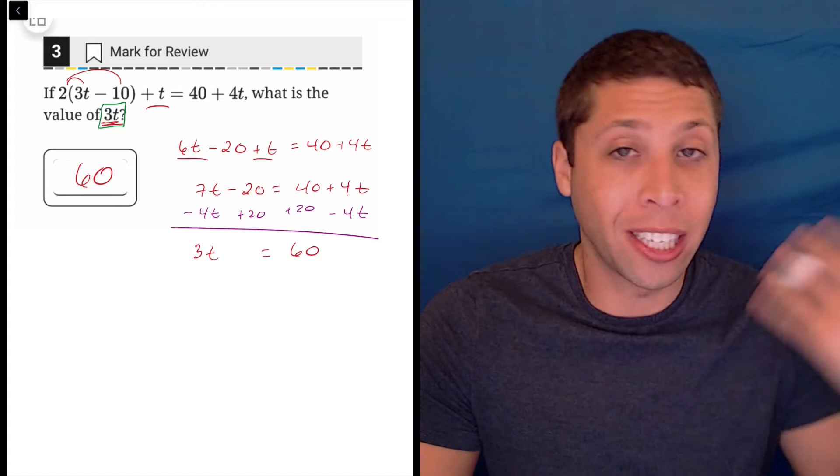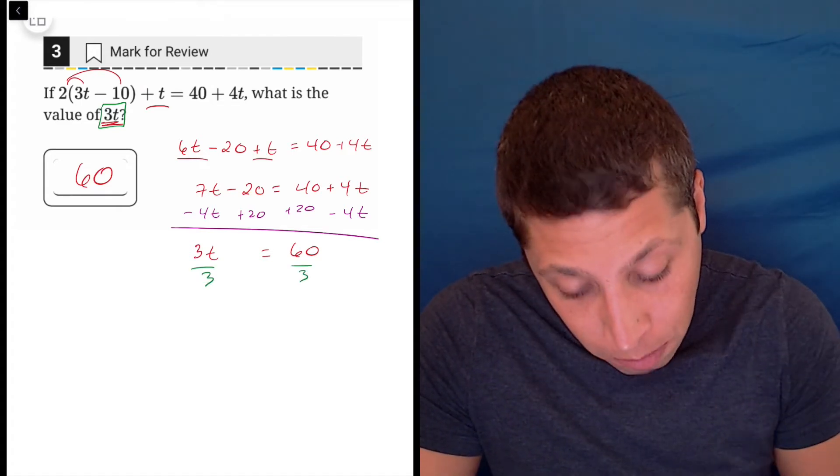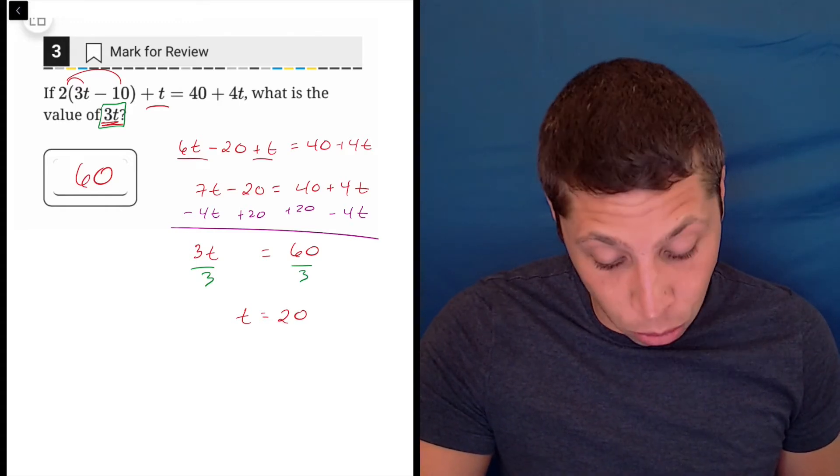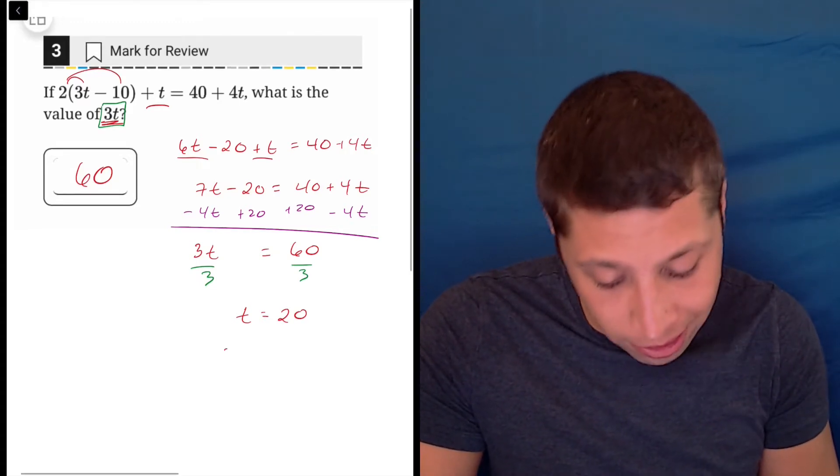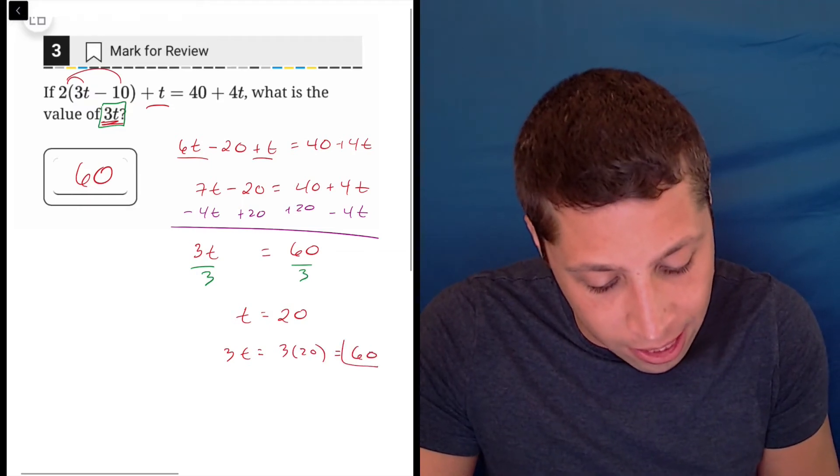But some of you just out of habit are going to continue and solve for t anyway. And that's fine. Just make sure, like I said, you go back. And once you get t equals 20, you say, oh yeah, they wanted 3t. So 3t is 3 times 20 is 60. Same answer.